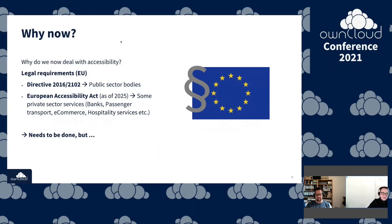Why do we deal with accessibility at ownCloud? The answer is simple: because we need to. There have been EU directives — the first one, Directive 2016/2102, means every public sector body needs to have accessible digital services. As of 2025, the European Accessibility Act will be enacted, covering private sector services such as banks and passenger transport. For banks, ATMs for example will need to be accessible. Since we have public sector customers, we also want to be accessible.